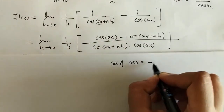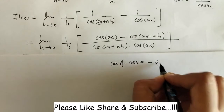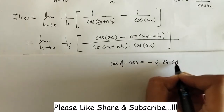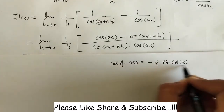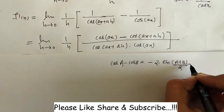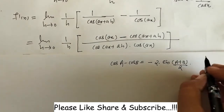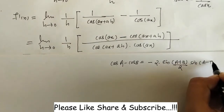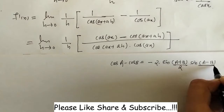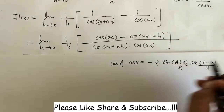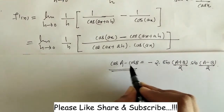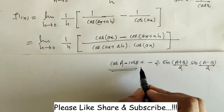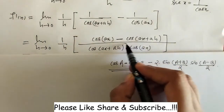We use the identity: cos(A) - cos(B) = -2 × sin((A+B)/2) × sin((A-B)/2). This is the factorization of cos(A) - cos(B).